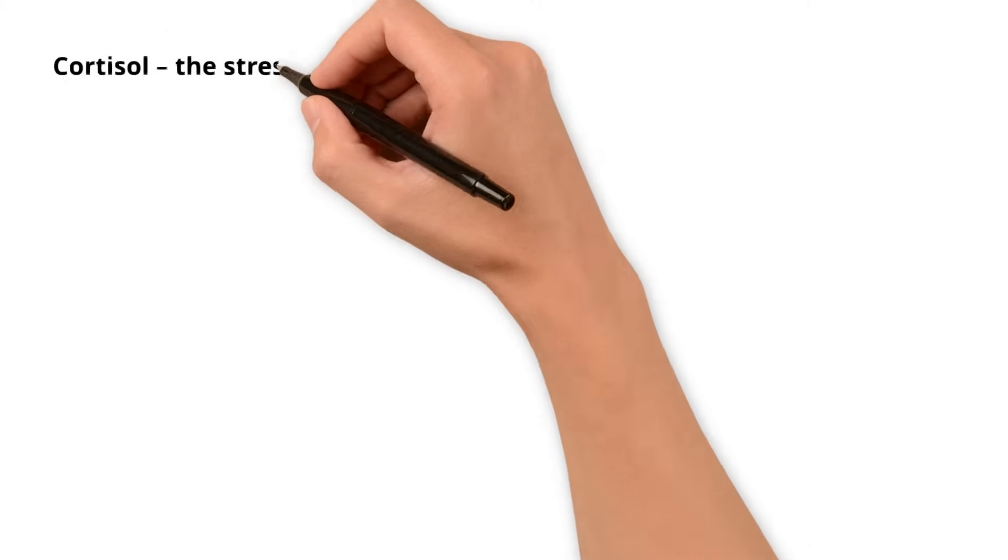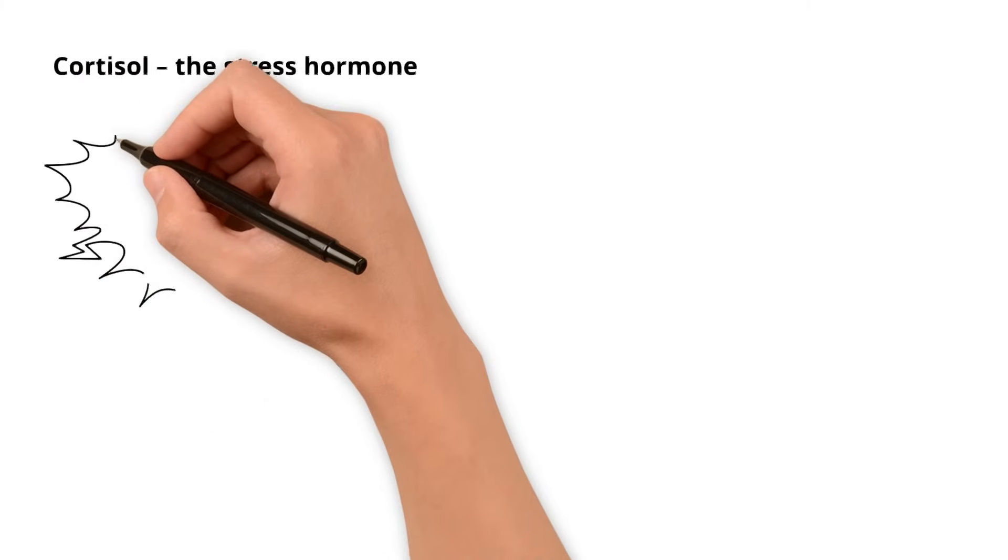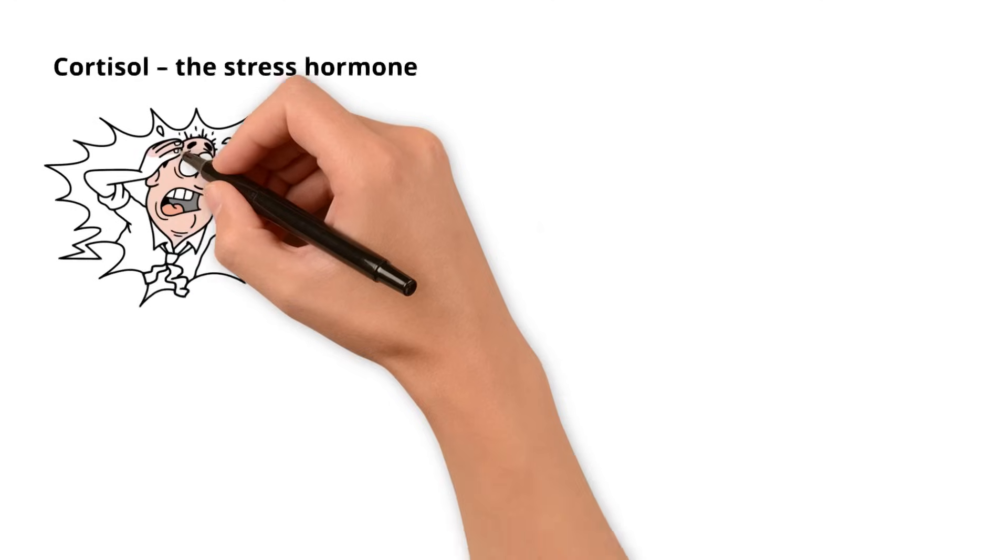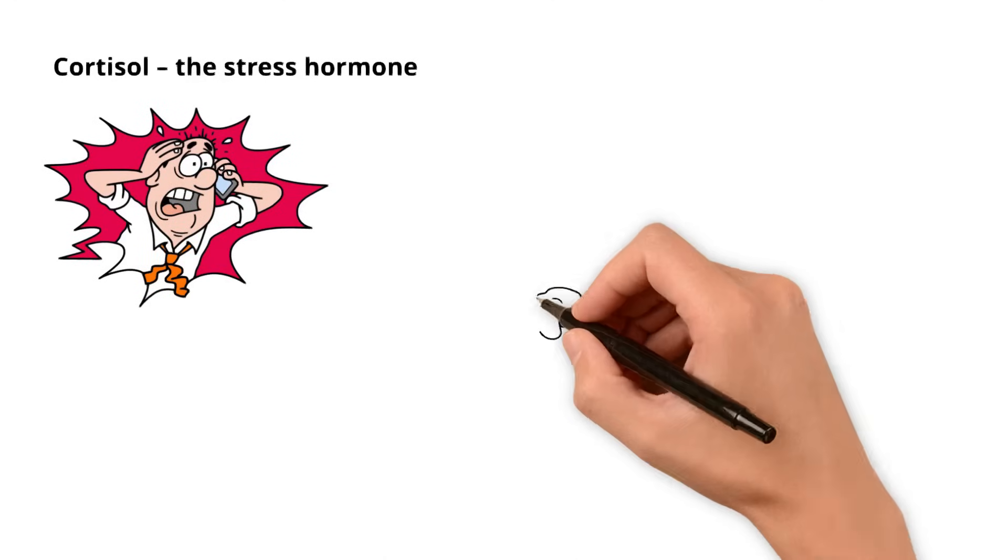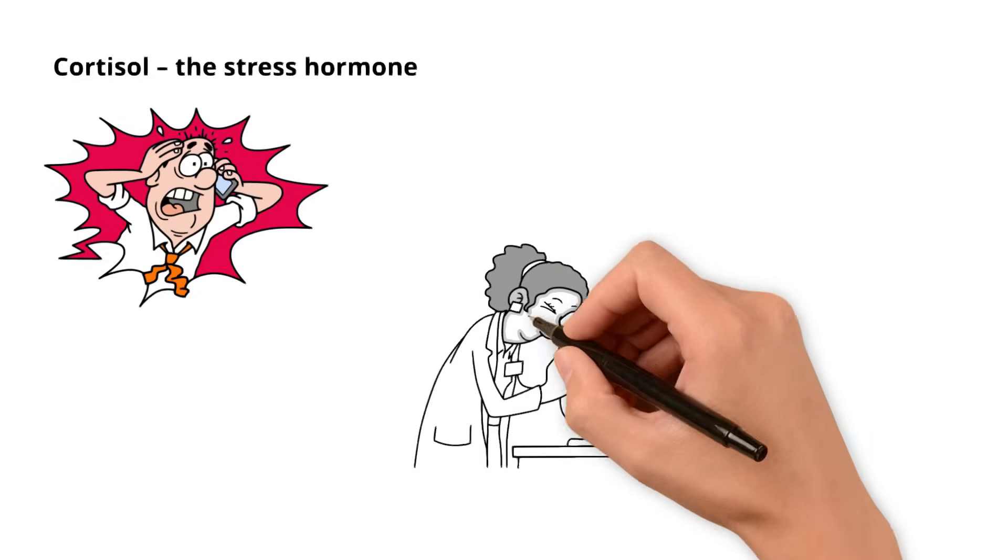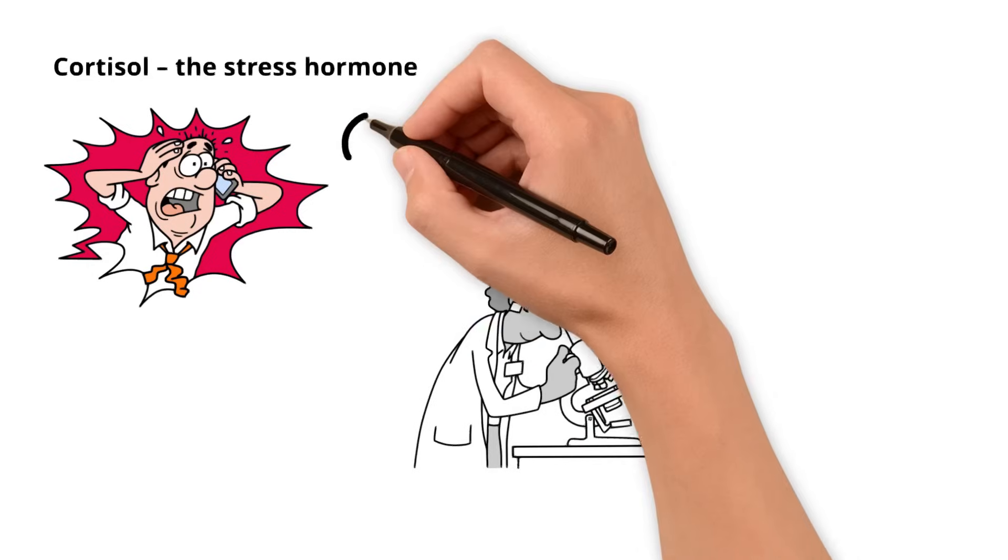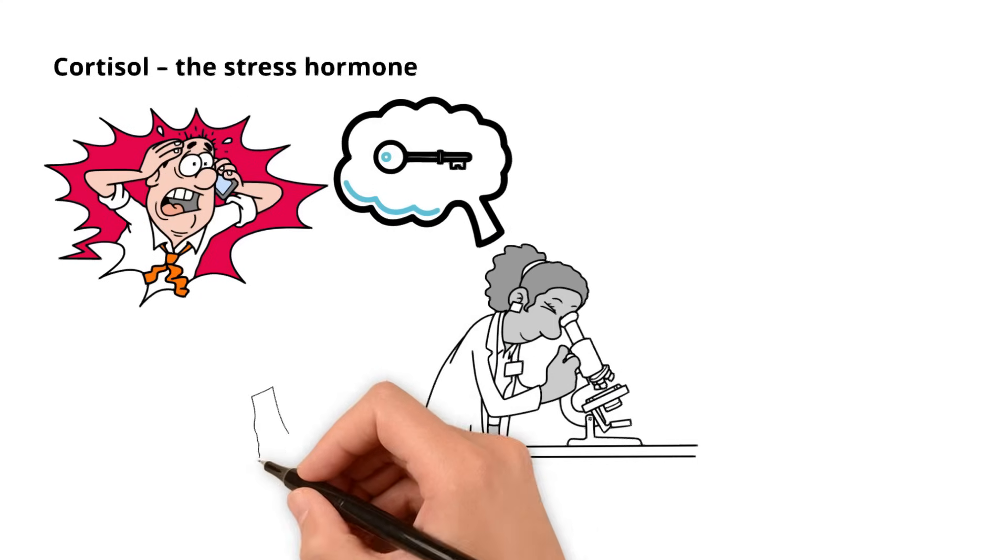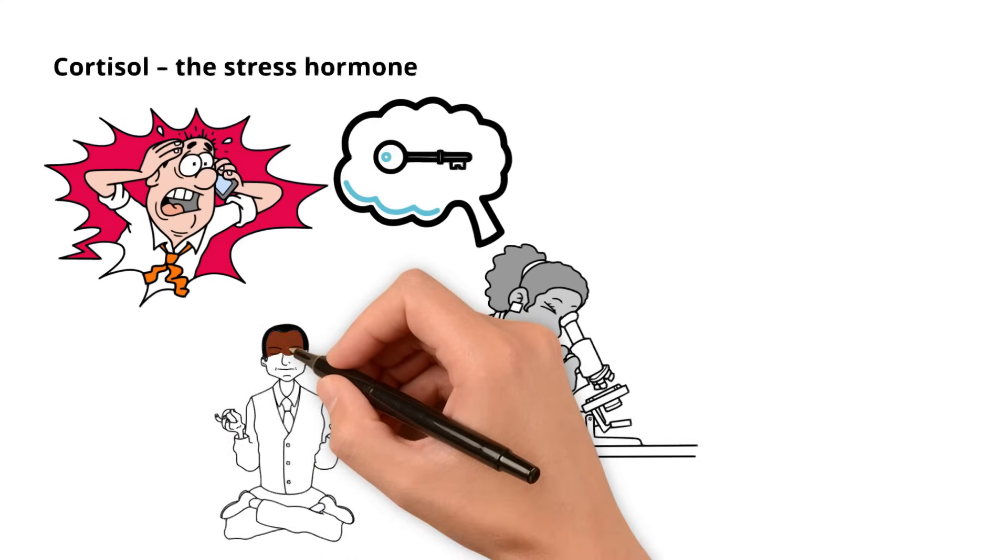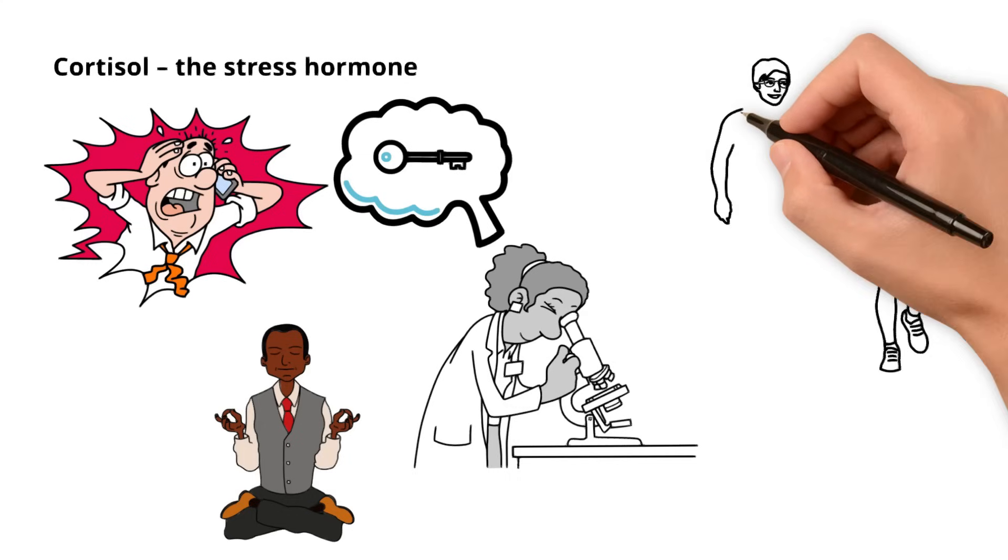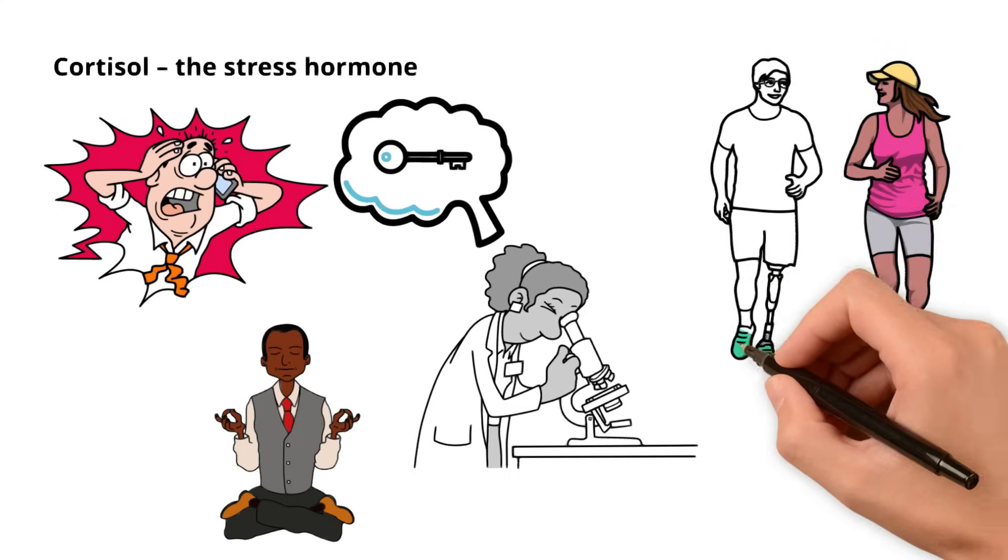Cortisol, the Stress Hormone. When you're in a stressful situation, your body releases cortisol to help you handle the threat. In 2018, a Harvard medical study found that chronically high levels of cortisol are linked to a reduction in the size of the hippocampus, the part of the brain responsible for memory. However, researchers also discovered that activities like yoga and running can help lower cortisol levels and restore brain function.